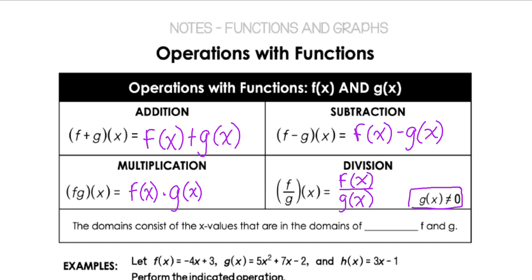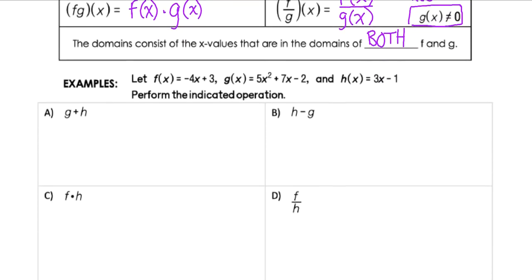Speaking of restrictions, when we do operations with two functions, the domain is going to be the x-values that are in the domains of both functions — f and g. So when we say g(x) can't be 0, that means we can't plug in an x-value that would make it equal 0. That is a domain restriction we would have to include when doing division. Those are the basics of the four operations.